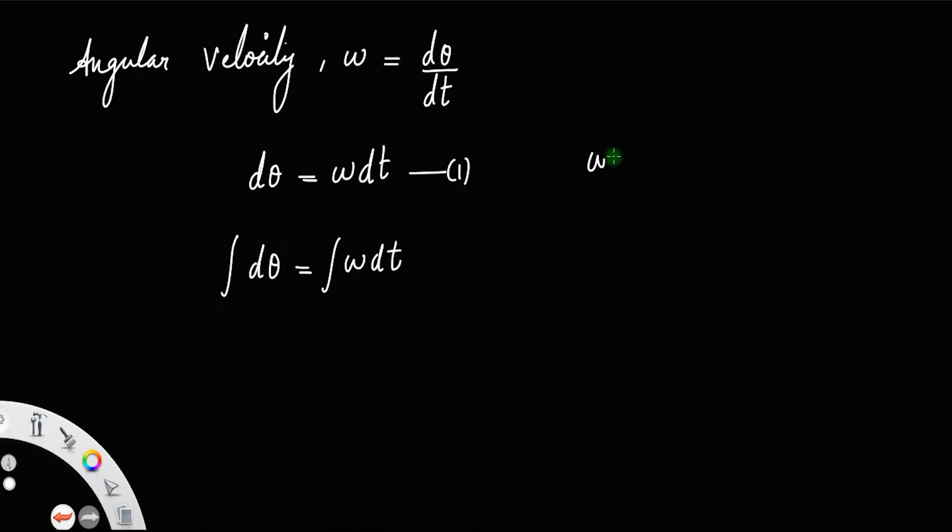When t equals 0, we have θ equals 0. Initially, we take the angular displacement as 0. When t equals t, we have θ equals θ.